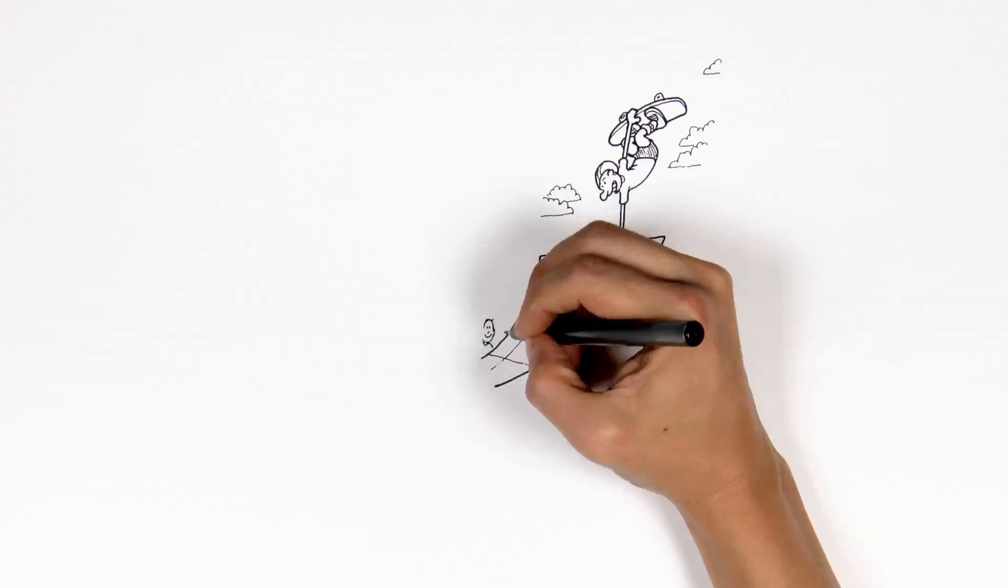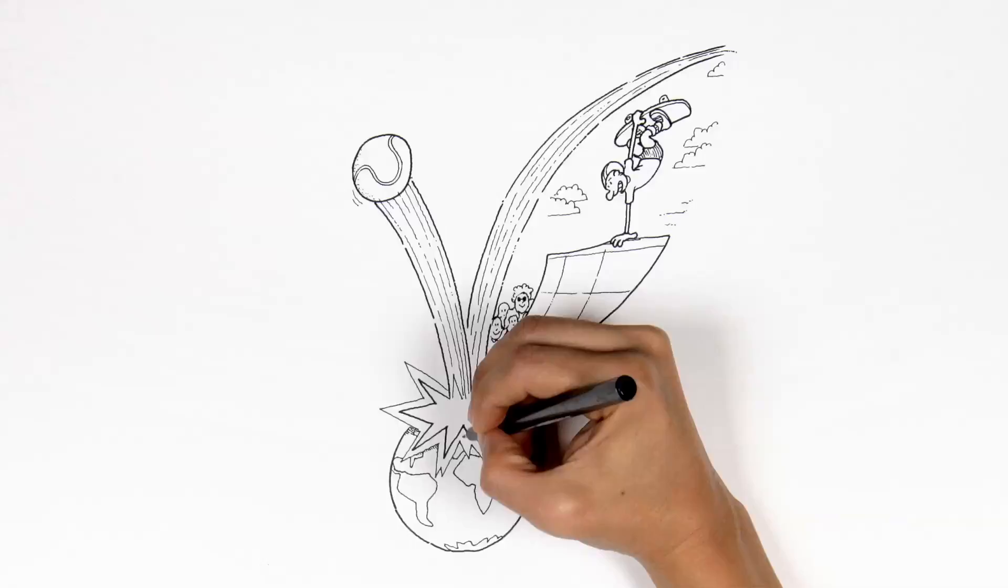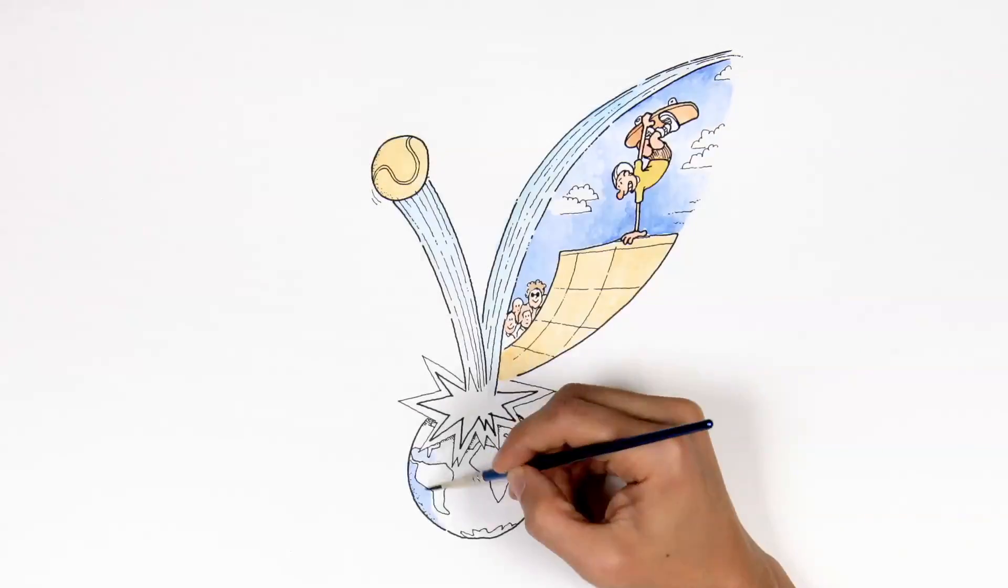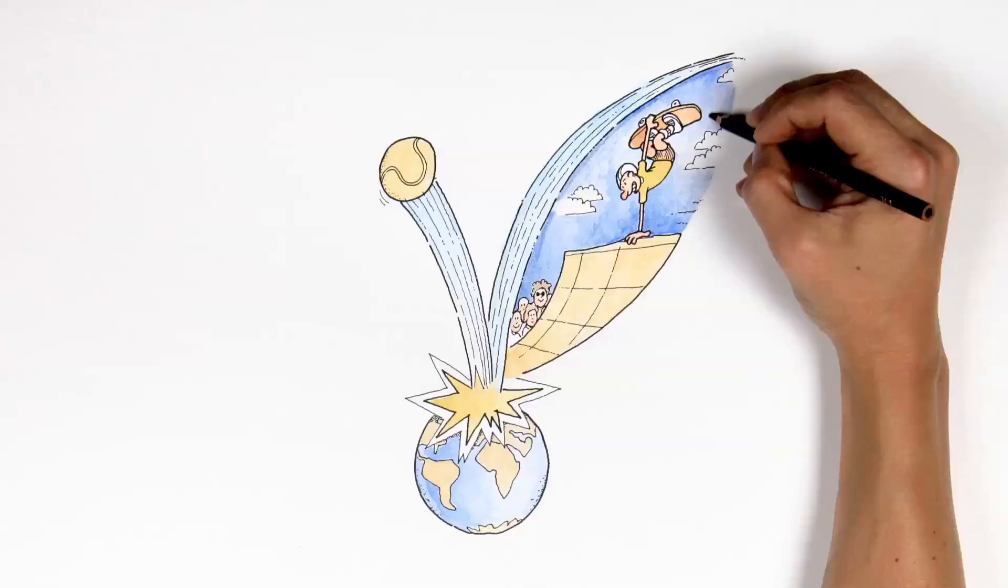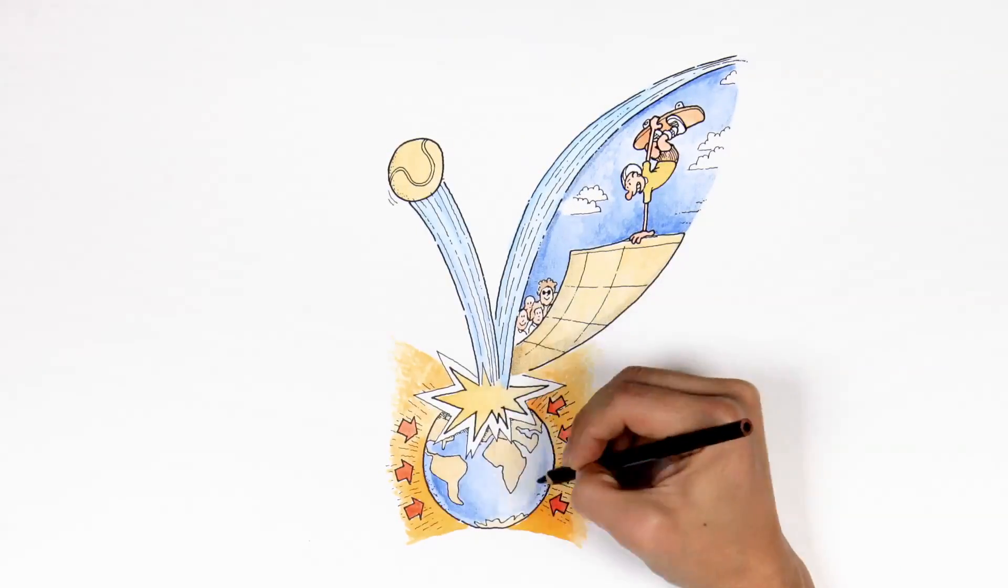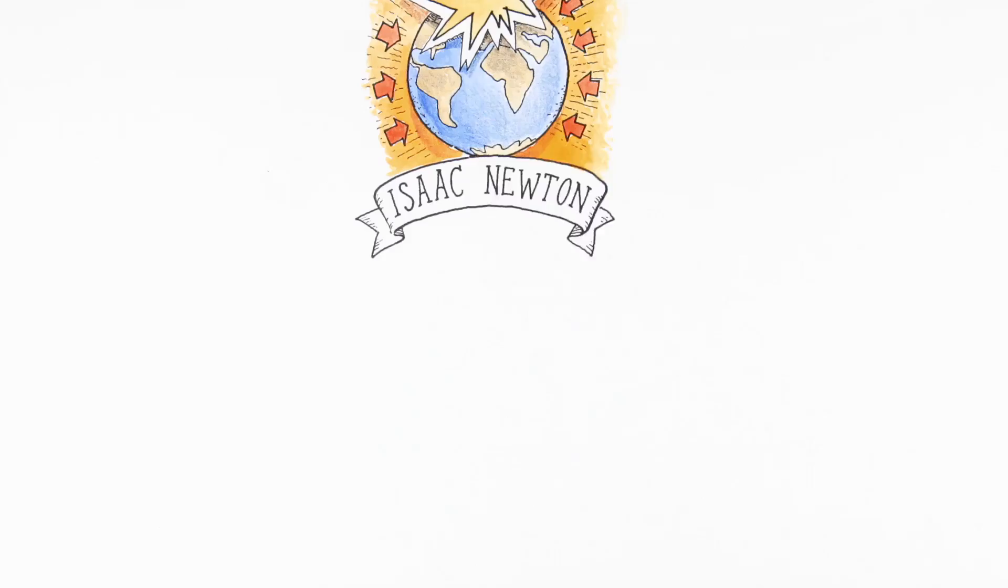There are things we know about our world that seem evident and even obvious, like gravity, for example. But it hasn't always been so obvious. Gravity was only explained by the end of the 17th century by the British scientist Isaac Newton.